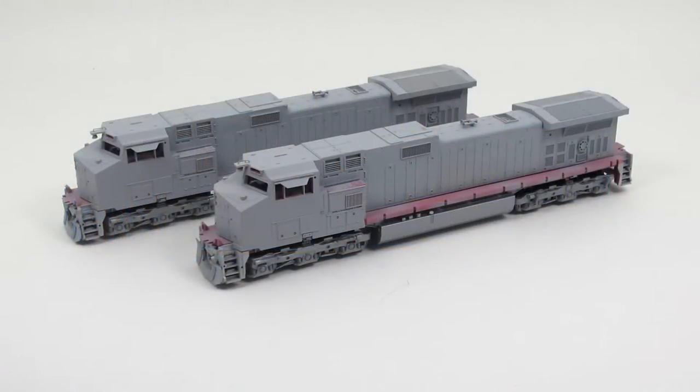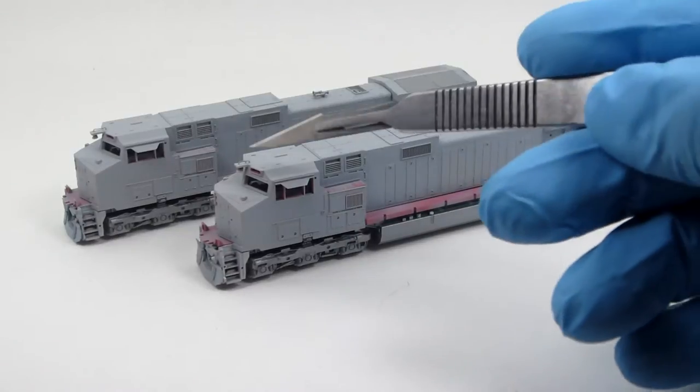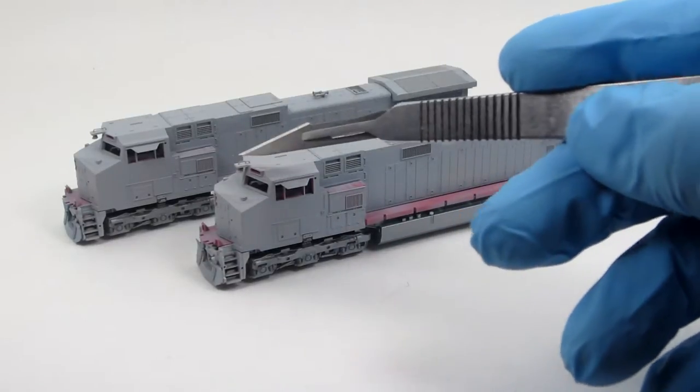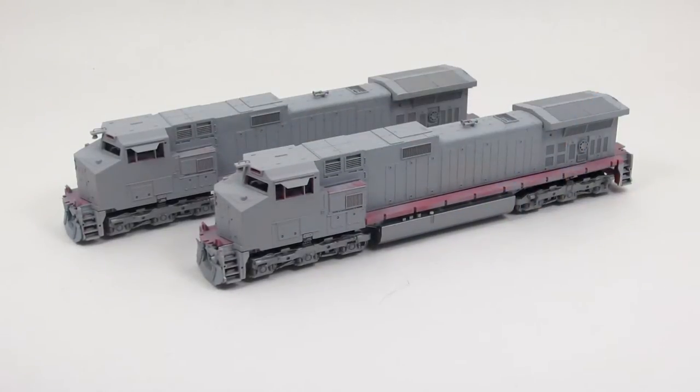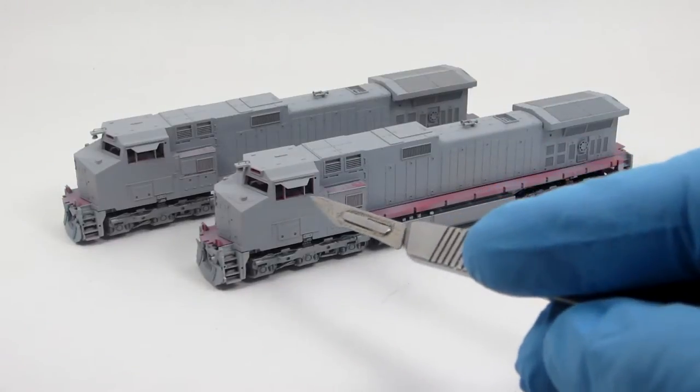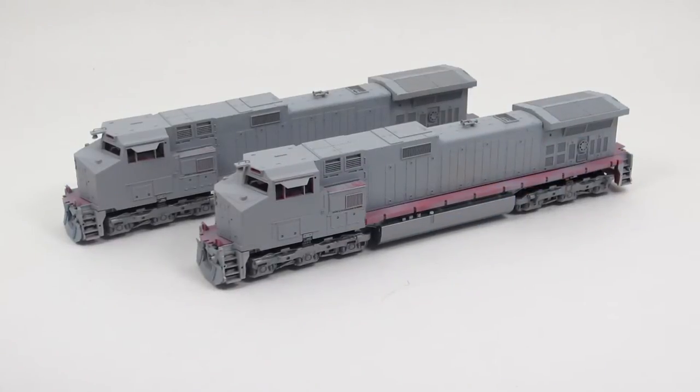I started with a pair of BNSF units from Kato and obviously I've stripped them down. Didn't do too much modification on these ones except for the obvious Canadian bells over the cab. Had to do that on both of those. It just sticks out so much and really adds to the engine. Also went ahead and added sun shades over these ones but not much beyond that.